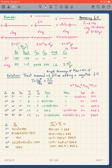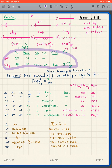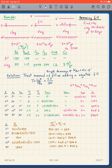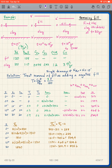Our question is: what will be the clay thickness at the end of thirty years? All soil properties are given. Our OCR is 1.2, C_sub_v is three square feet per year. The solution is to treat removal of fill as adding a negative fill. With single drainage, HDR equals H, which is the clay thickness — ten feet.